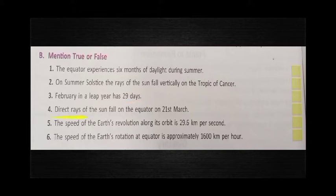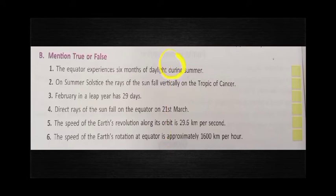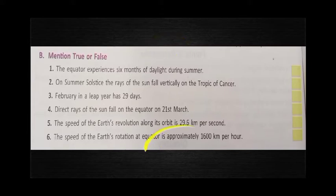Question 4: Direct rays of the sun fall on the equator on 21st March. The answer is true. As we discussed in Question 2, equinox means day and night are equal, and on equinox the sun's rays fall directly on the equator. The two equinox dates are 21st March and 23rd September, so this is correct.